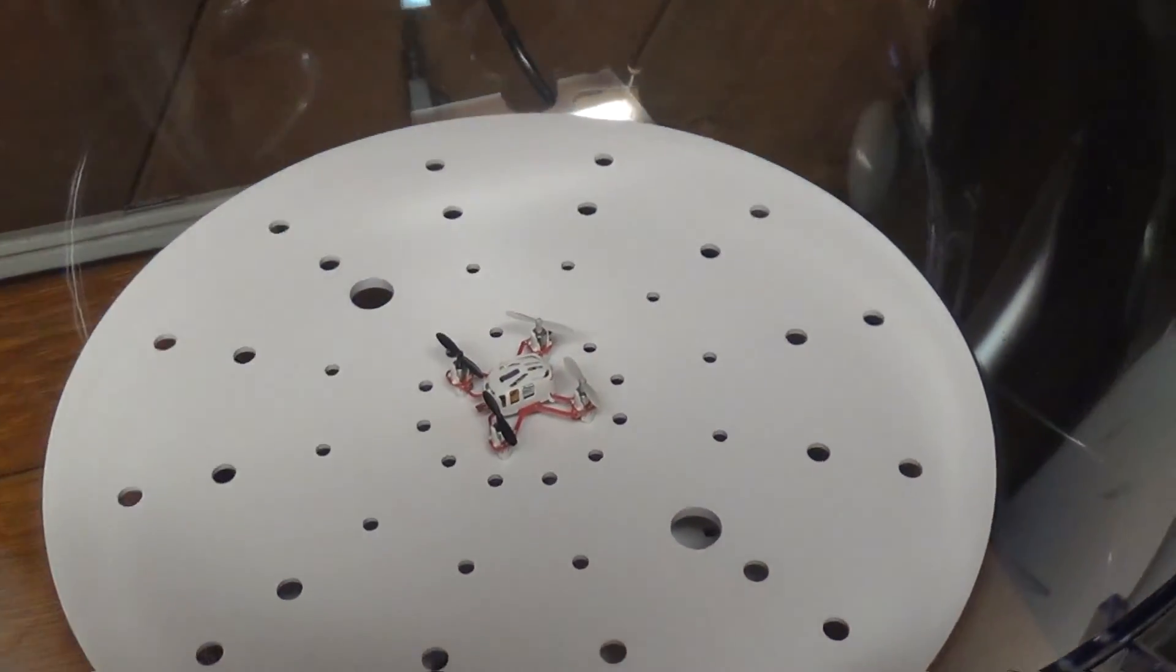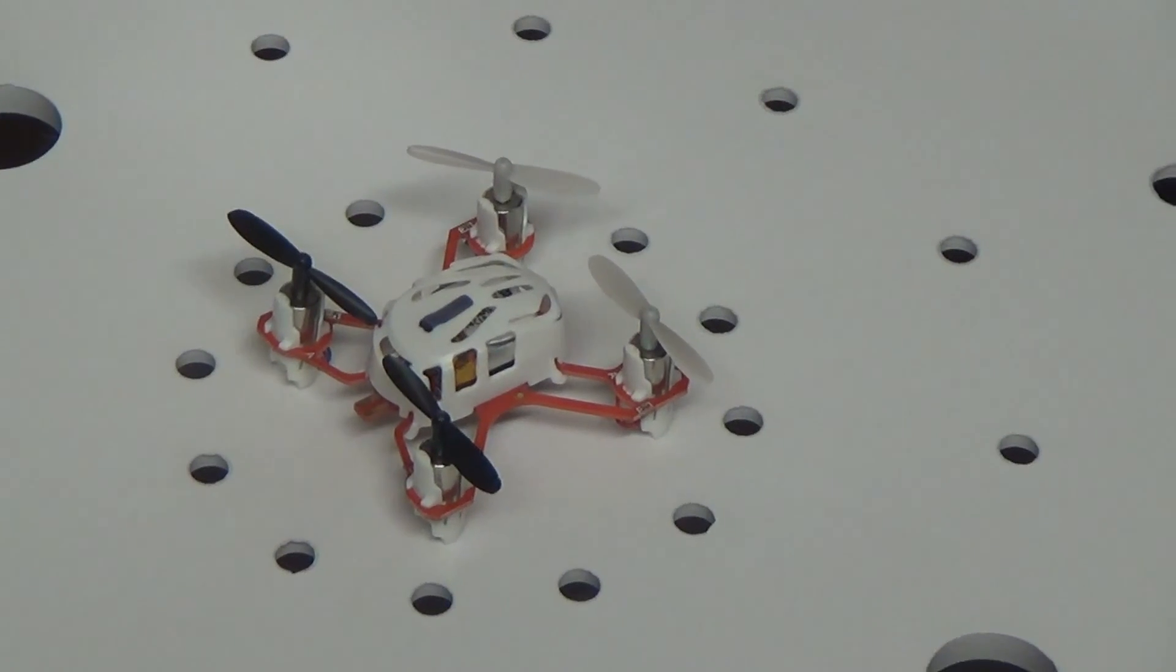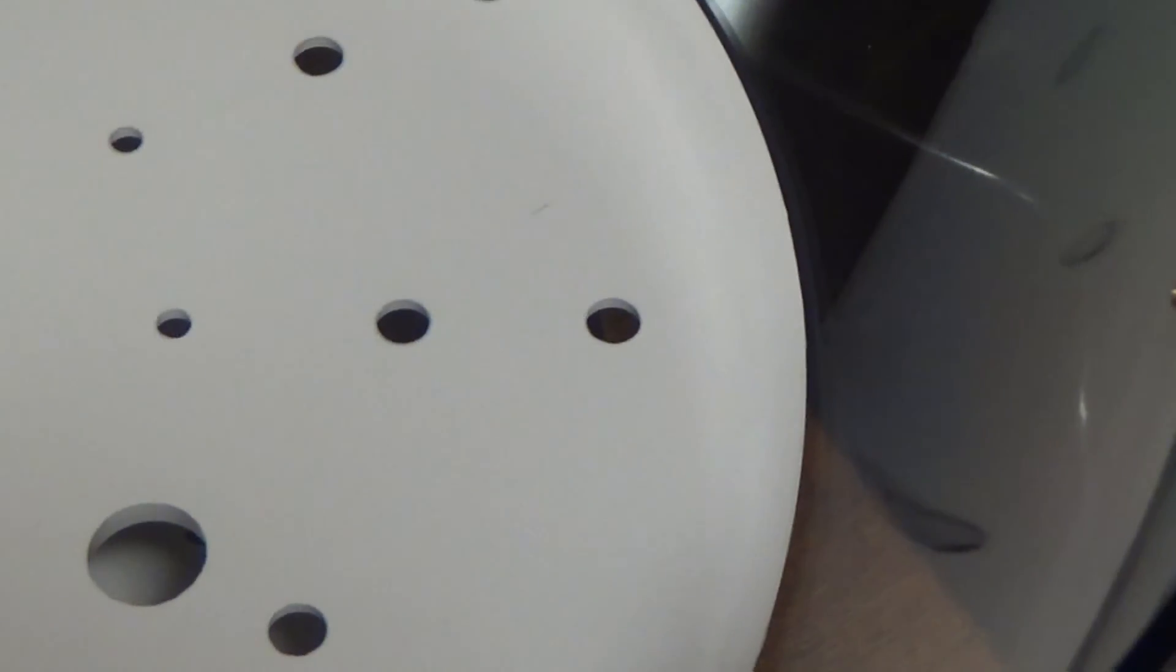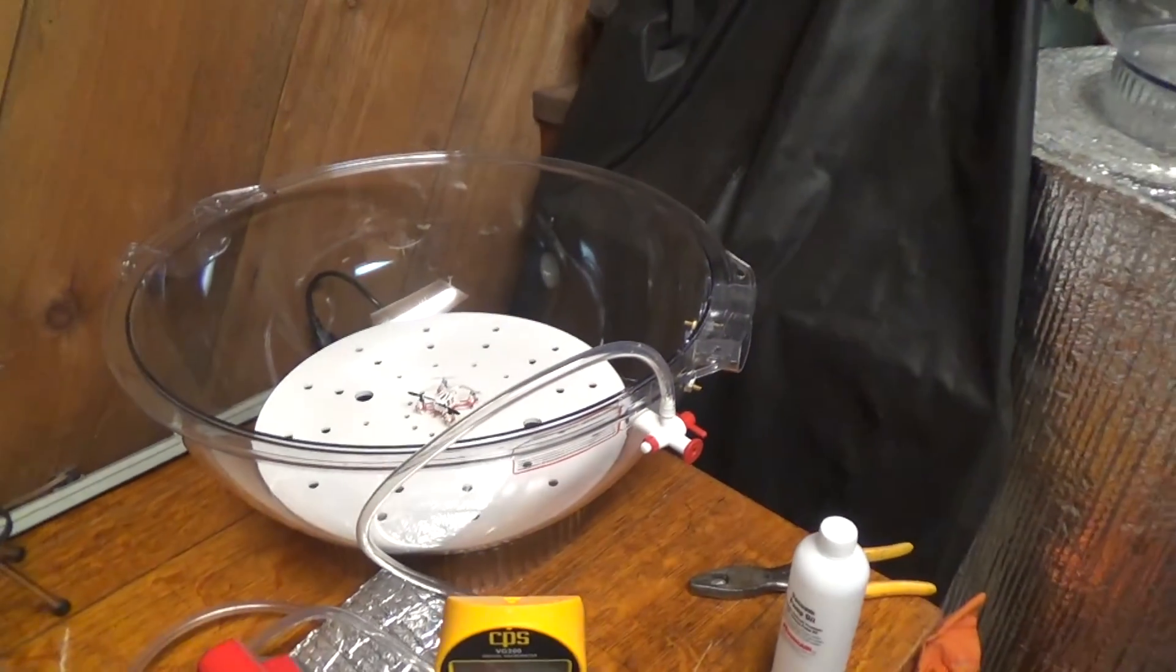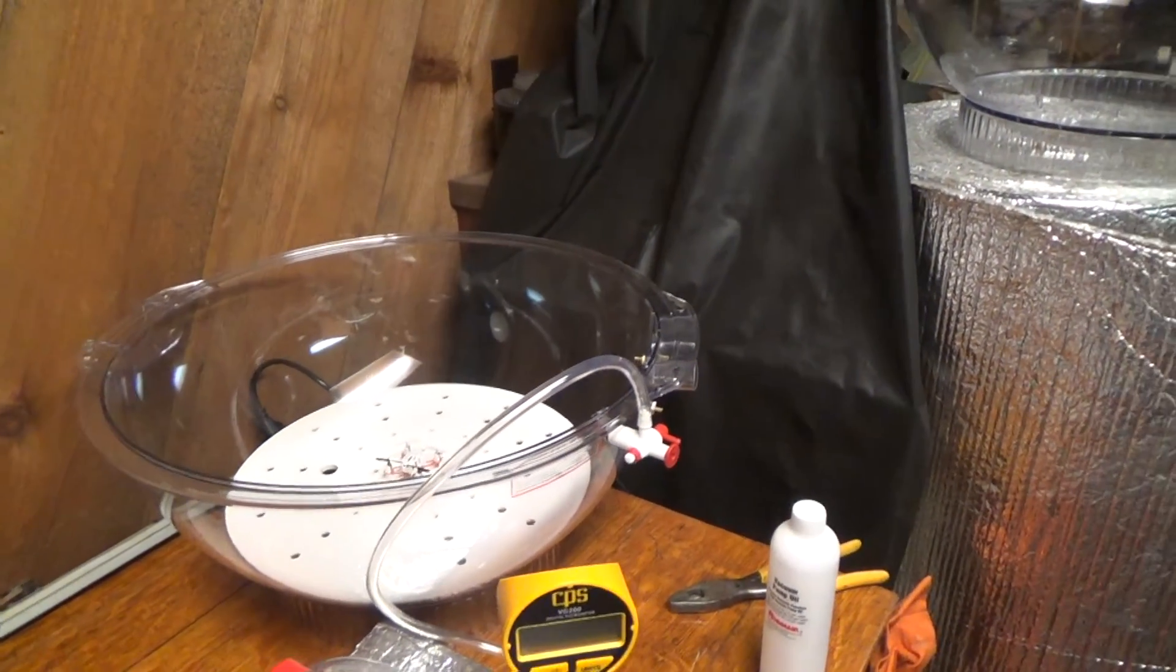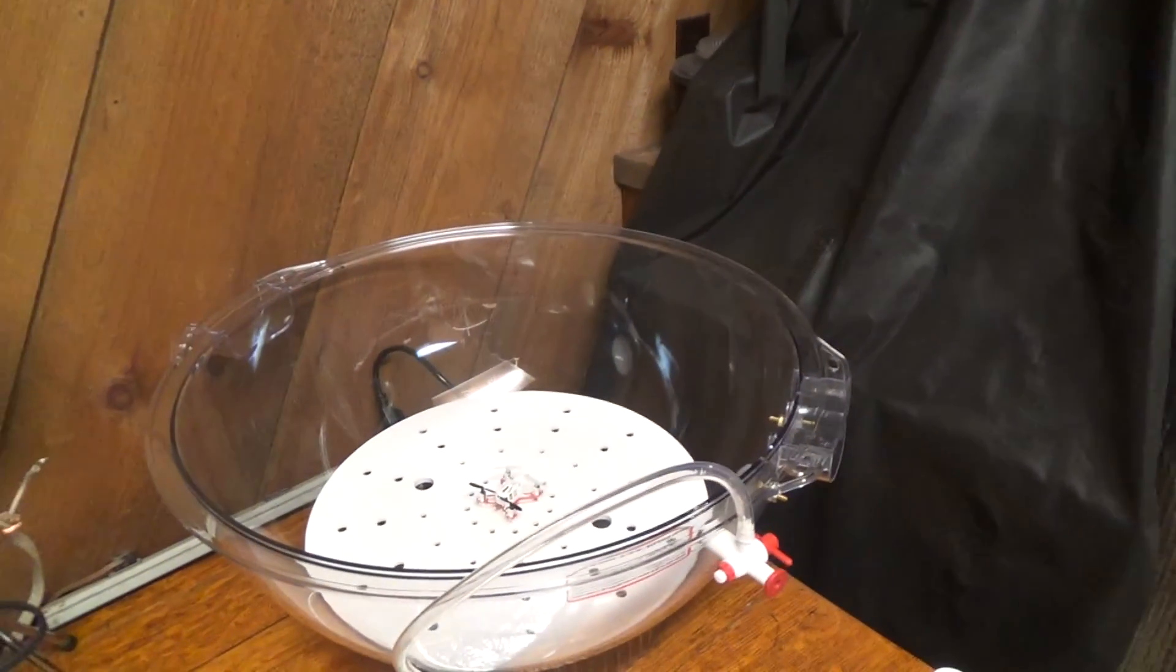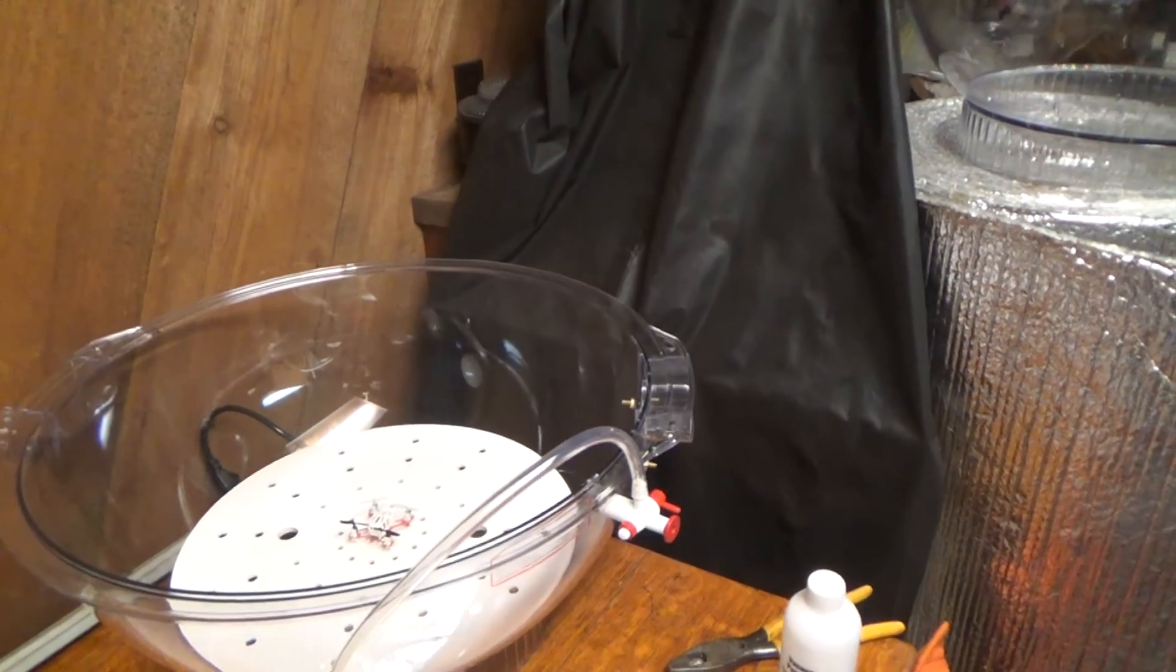I have purchased a tiny, tiny, tiny Estes Proto-X quadcopter, which has a pitch of two inches from the center of these blades. The reason I bought such a small quadcopter was that I wanted to have a very large difference between the size of the quadcopter and the chamber, so that there's less of a reason to believe that any effects from the size of the chamber are affecting the flight.